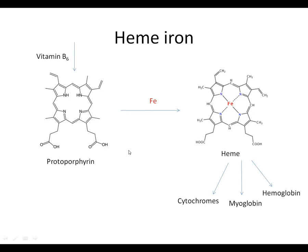The form of iron that we can absorb best is heme iron — iron that is bound up in a structure called heme. Heme is formed when this molecule here, which is called protoporphyrin, combines with iron to form heme.